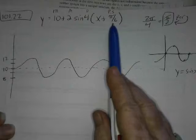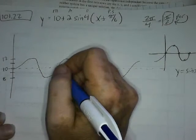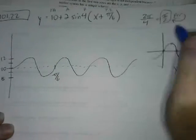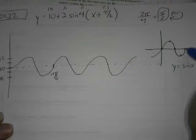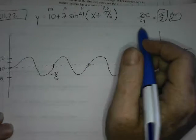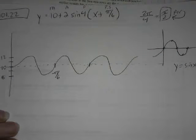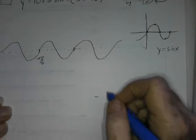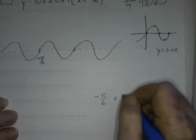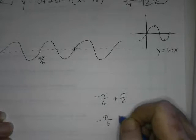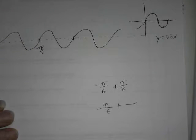this is going to be at negative pi over 6. And then the distance from this one to the last dot, the last point, would be pi over 2. So, negative pi over 6 plus pi over 2. I've got to do some fraction math. Negative pi over 6 plus pi over 2.